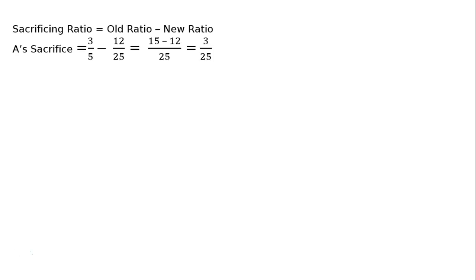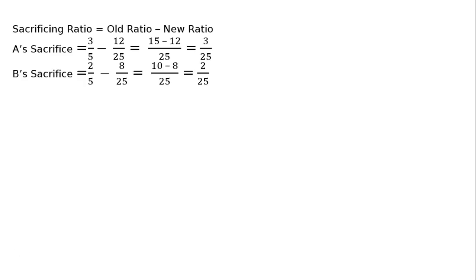Sacrificing ratio = old ratio − new ratio. A's sacrifice = 3/5 − 12/25 = 15/25 − 12/25 = 3/25. B's sacrifice = 2/5 − 8/25 = 10/25 − 8/25 = 2/25. Therefore, the sacrificing ratio of A : B = 3 : 2.